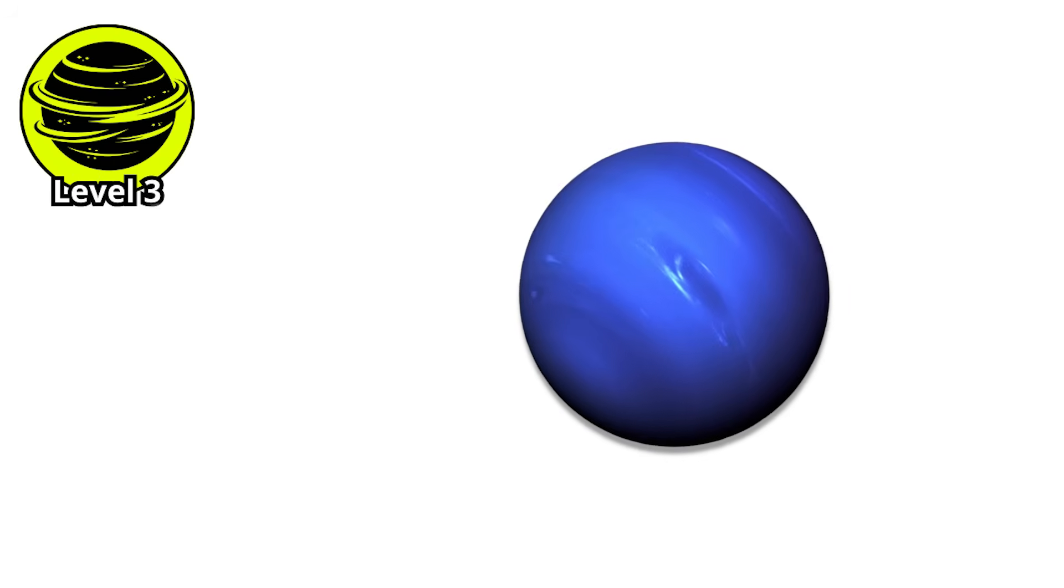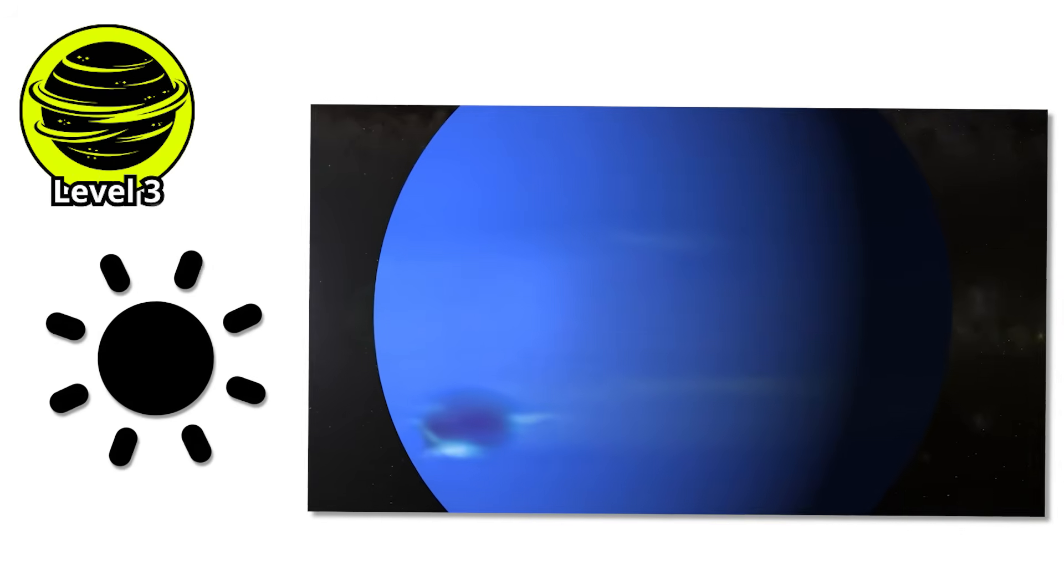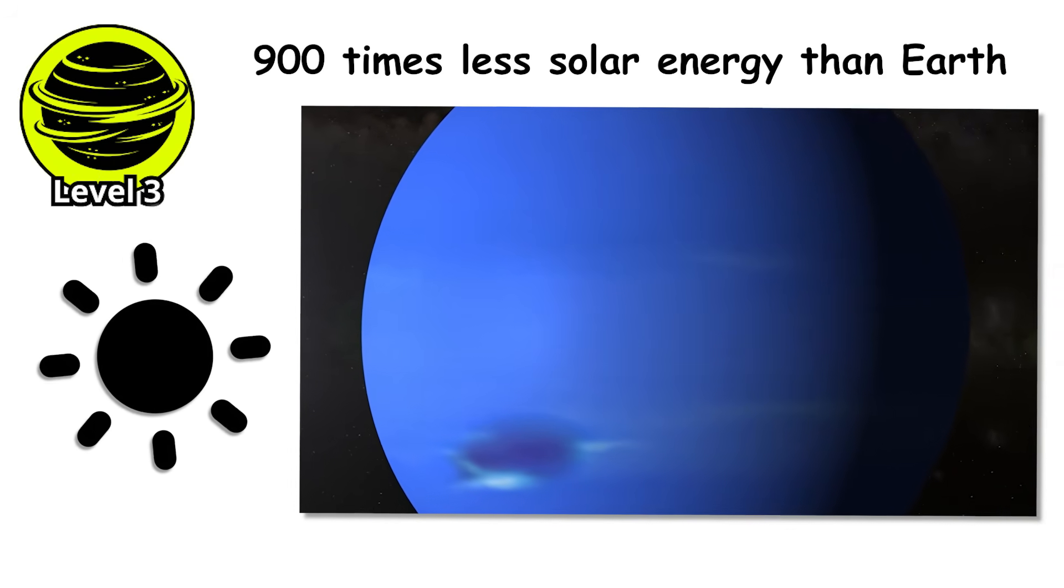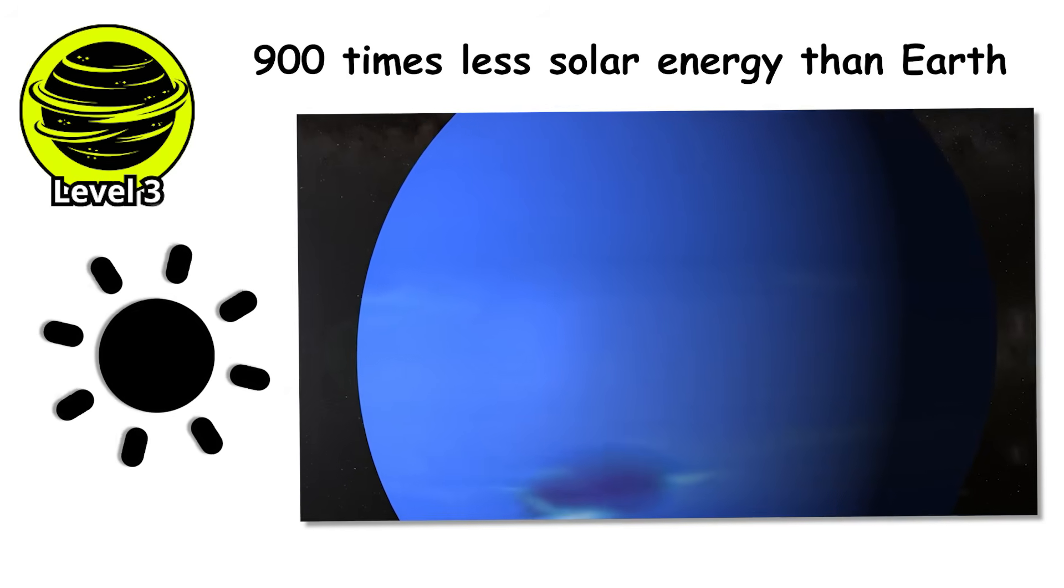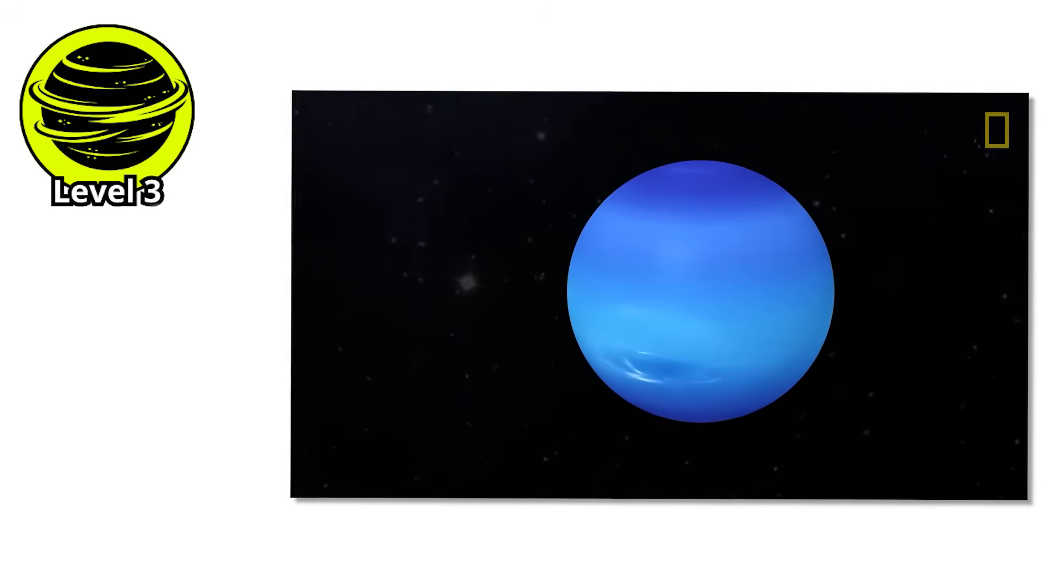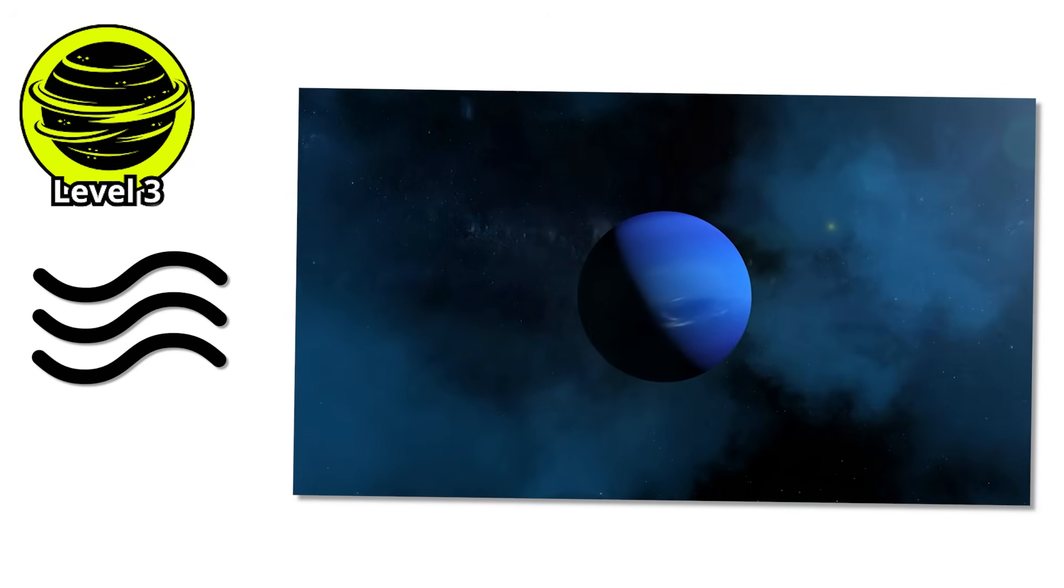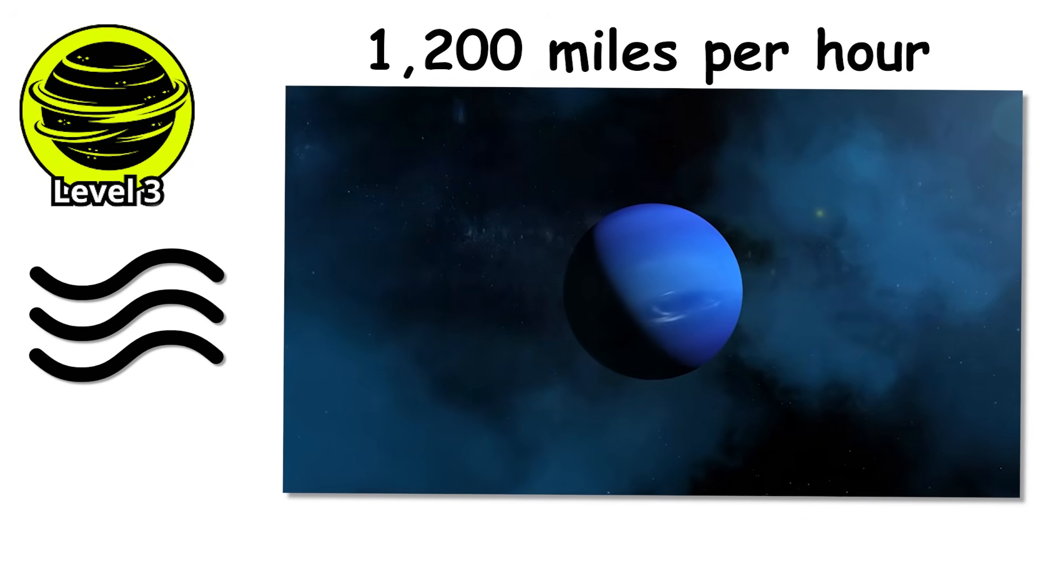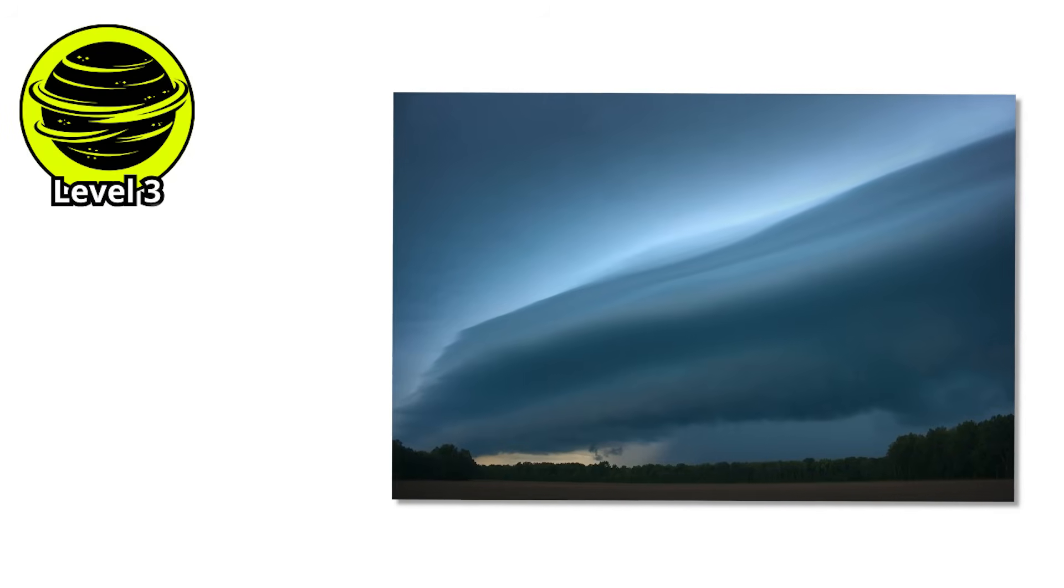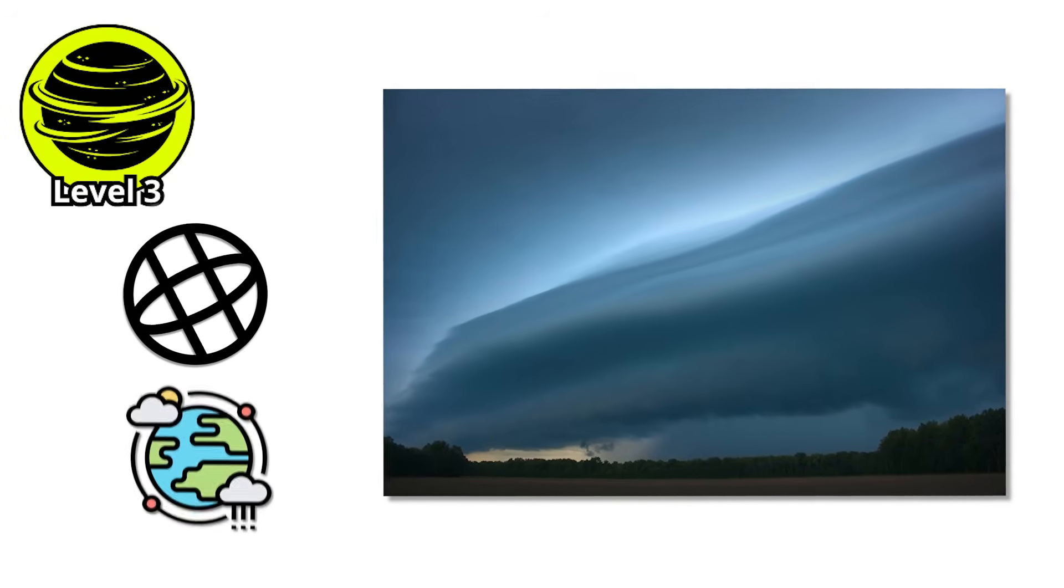Level 3. Neptune shouldn't have weather this violent. It's so far from the Sun, receiving 900 times less solar energy than Earth, that by all rights it should be a frozen, quiet ball of ice. Instead, it has the fastest winds in the entire solar system. The winds on Neptune scream across the planet at 1,200 miles per hour. That's faster than the speed of sound on Earth. These aren't gusts or local phenomena. They're planet-wide jet streams in the upper atmosphere, driven by some internal heat source we still don't fully understand.